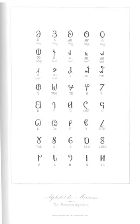In later documents, individual letters are written in their standard phonetic values. In 40-letter versions of the alphabet which include the letter representing the sound ju, that letter when standing alone can be used to represent the word you.